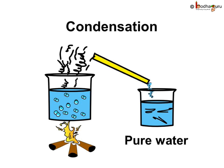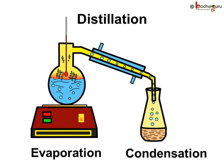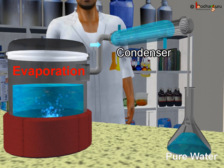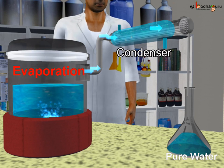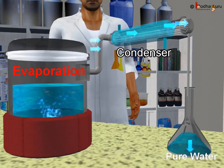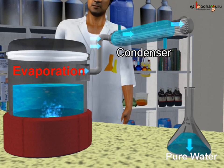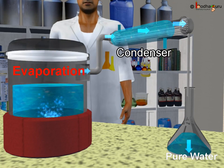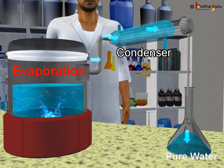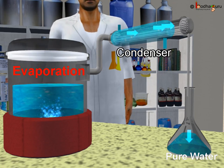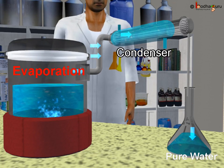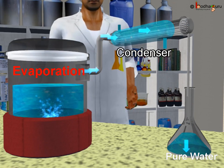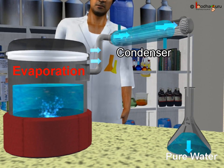Now, how do we collect the water vapor? The evaporated water, that is water vapor, is then cooled down or condensed in a jar to get pure water. This process of evaporation and condensation is called distillation. Distillation consists of two steps. Step one: evaporation, where water is evaporated into steam in a distillation flask. Step two: condensation, where the water vapor is converted into water by passing it through the condenser. The condenser is kept cool by circulating cold water. Water formed this way is the purest and is called distilled water.